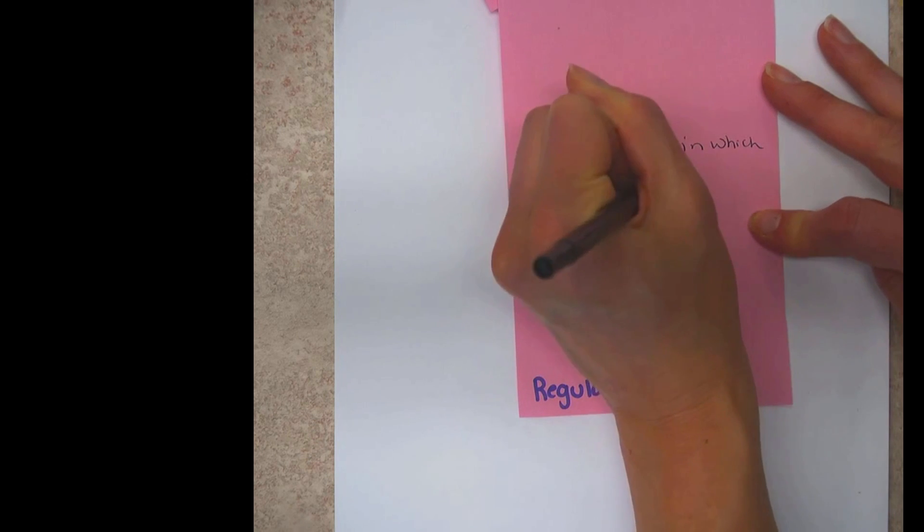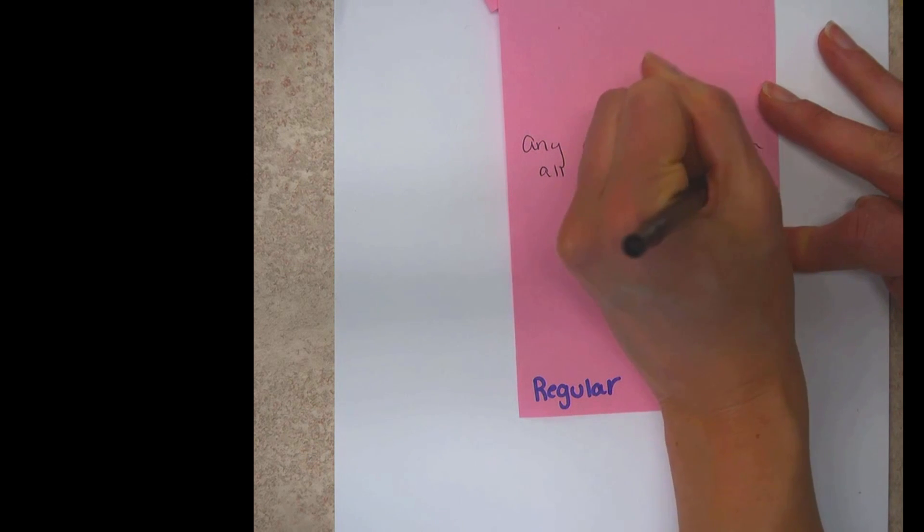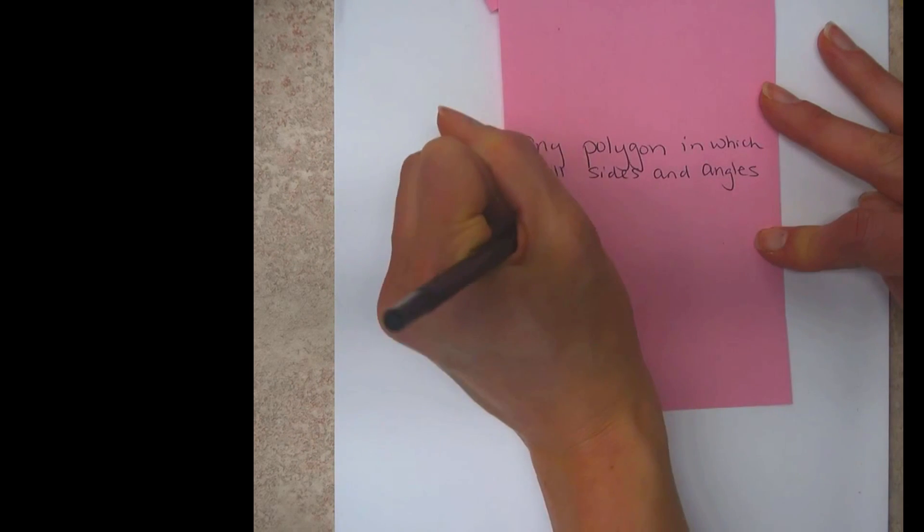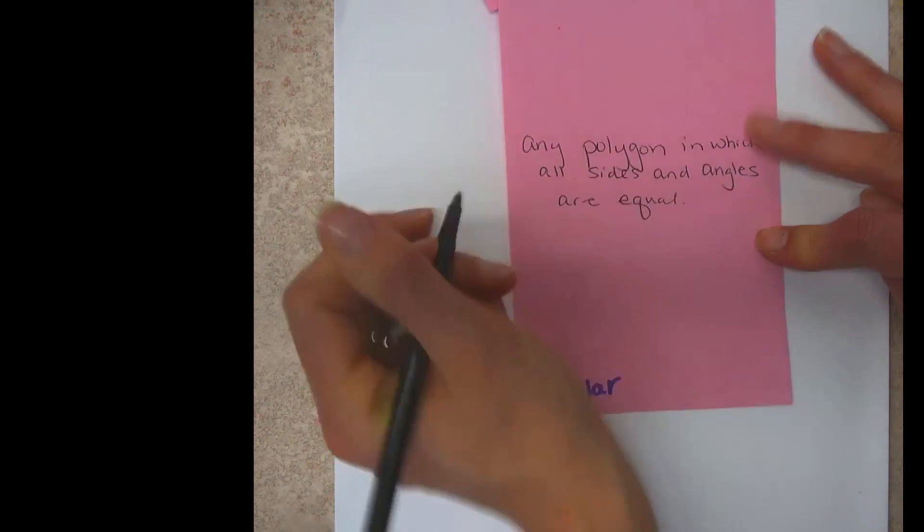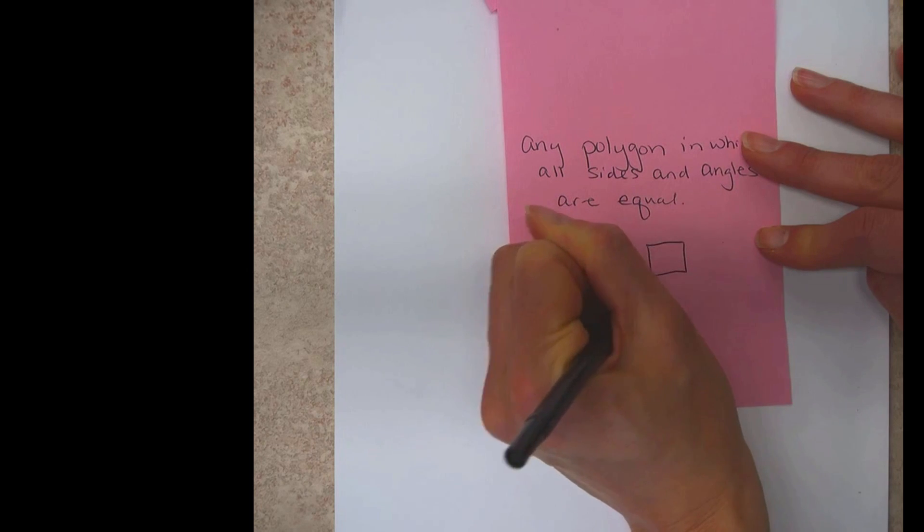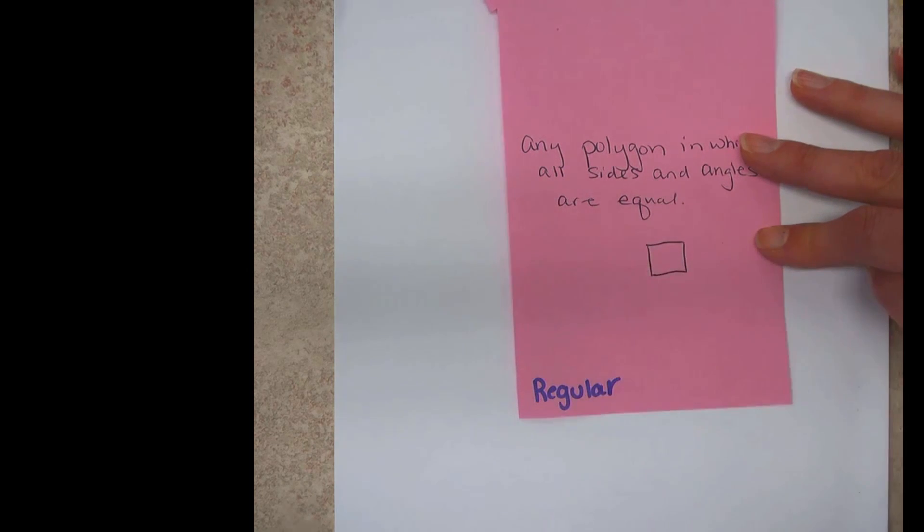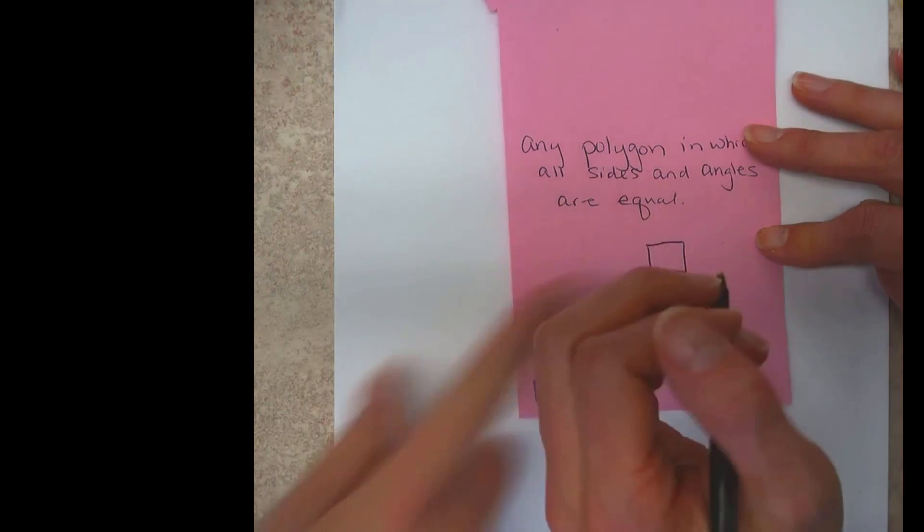So when you see, like, a stop sign, and it has all eight sides of the stop sign are equal, that is a regular polygon or a regular octagon. Some of you might be really good at that. I'm going to stick with a good old square. And then you would want to mark it so it's all the four sides.